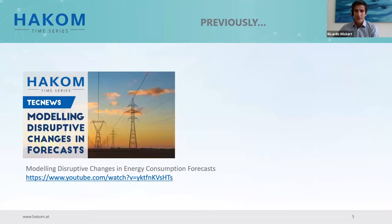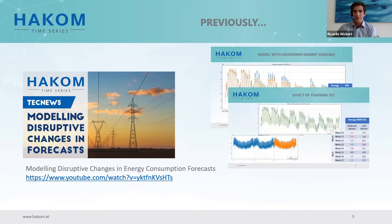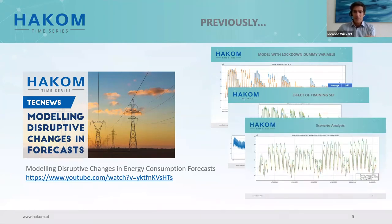In our second webinar, we tackled different approaches to modeling those changes in the context of a day-ahead forecast. We saw how a differences model or a dummy variable can already provide significant improvement. We observed that in certain cases, reducing the amount of historical data so that more recent events have a larger weight when training the models resulted in better performance. Finally, we looked at how different scenarios could pan out if we went back to a lockdown scenario or if we allowed the strength of the lockdown variable to vary. Today we'll revisit some of these topics from a visual perspective.